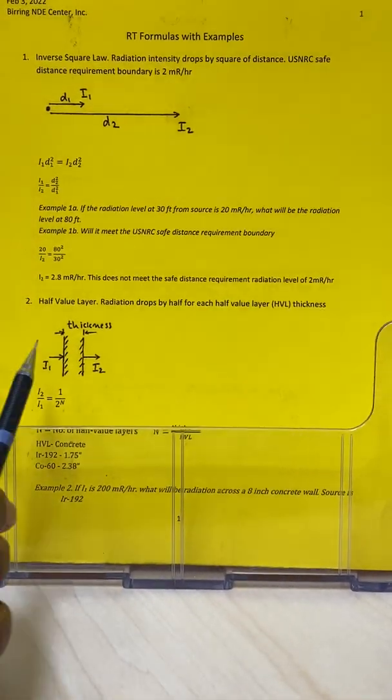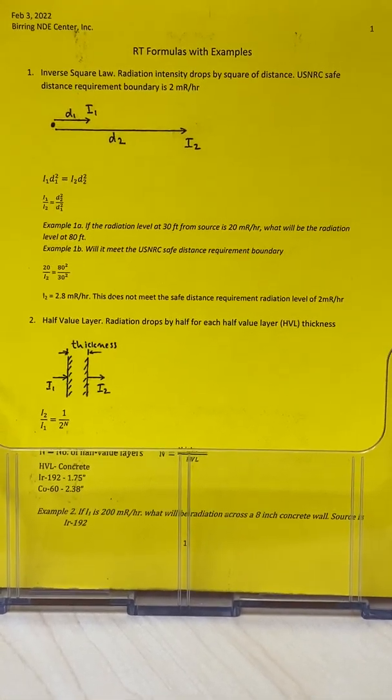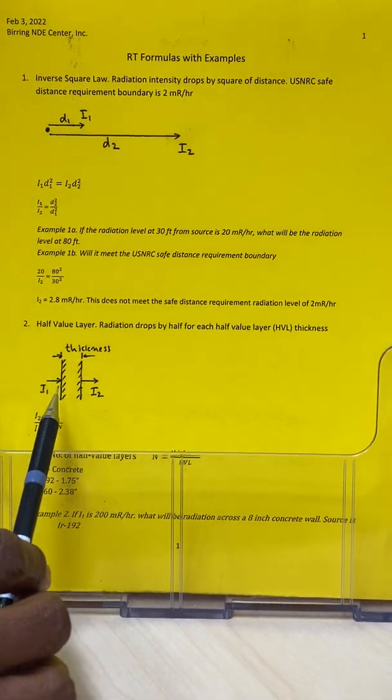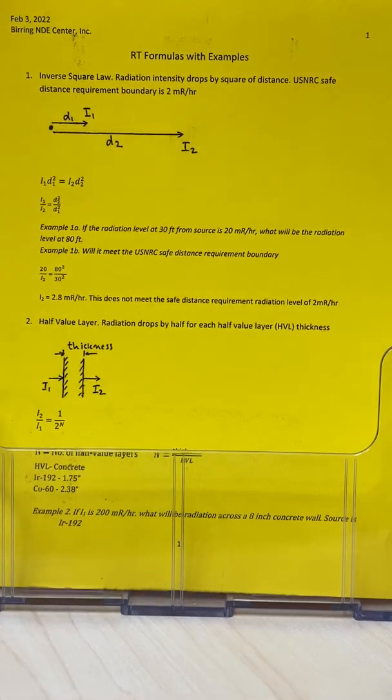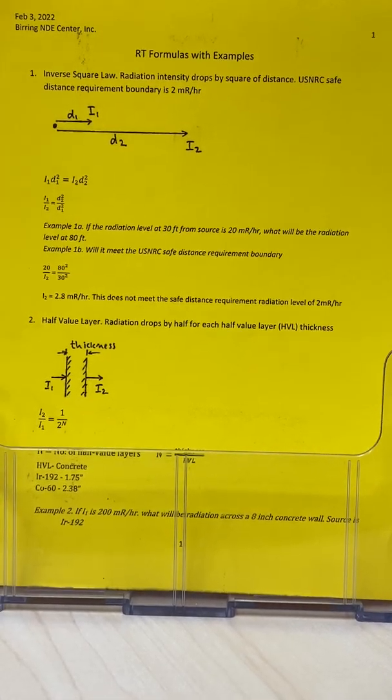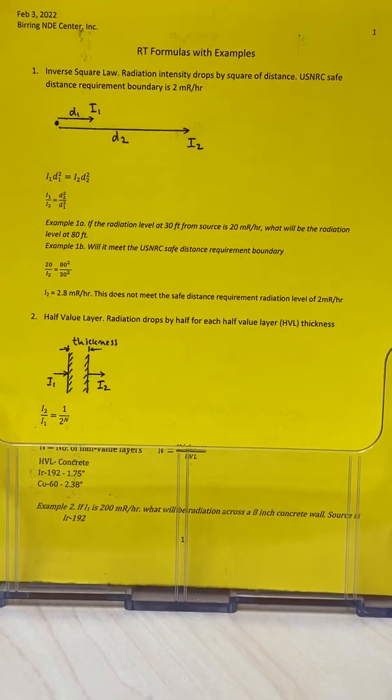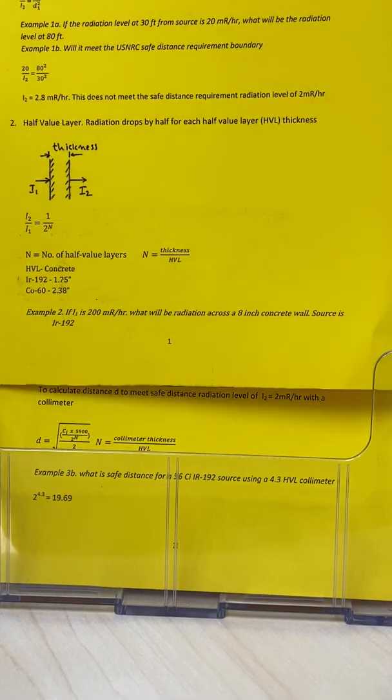The next one is half value layer. In this one, we're explaining that radiation drops by half across one half value layer. So if you have two half value layers, then it will be one half times one half, which is one-fourth of the radiation.